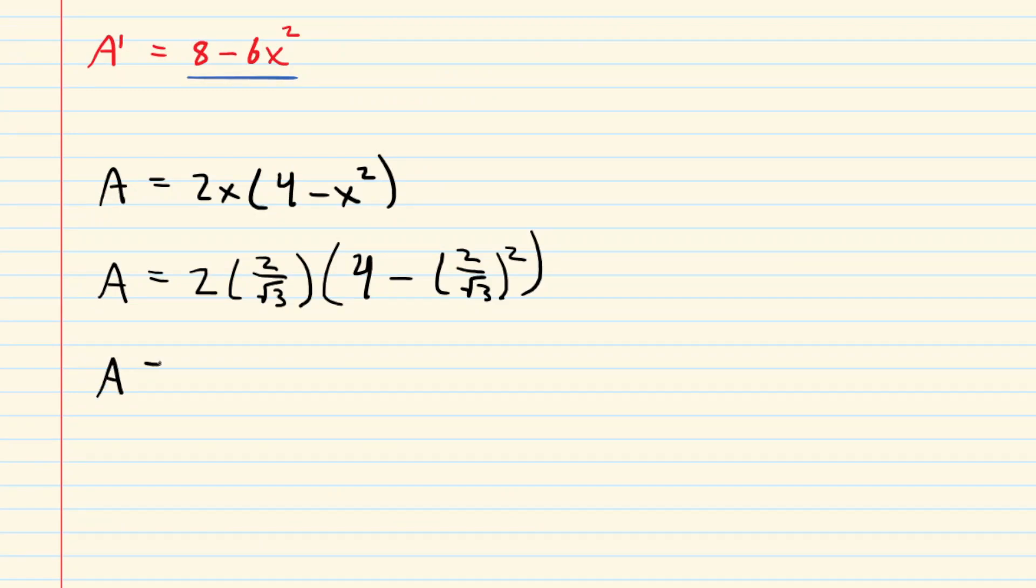There we have it. We can now just sort of simplify this. We have this 2 over 1, and we're going to multiply that by 2 over root 3. So remember, you multiply the numerators, multiply the denominators. So you'll end up with 4 over root 3. In the parentheses here, you have 4 minus, we have to square the 2 over root 3. We square the 2, that gives us 4. We square the root 3, that gives us 3.